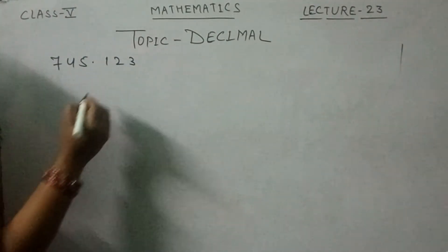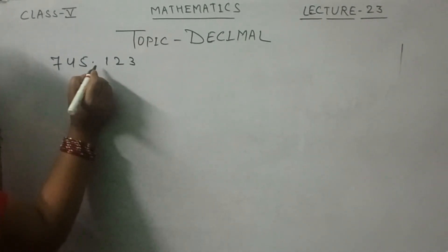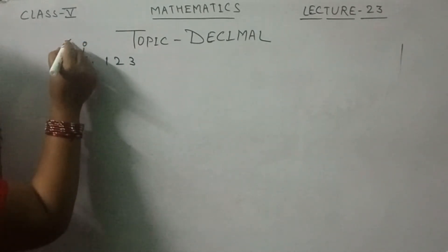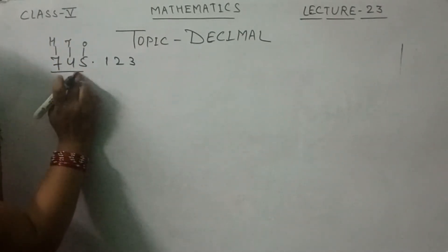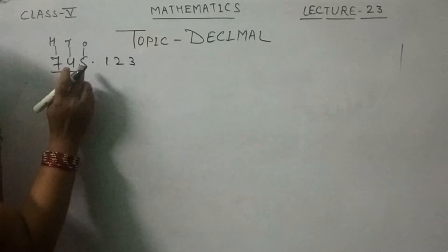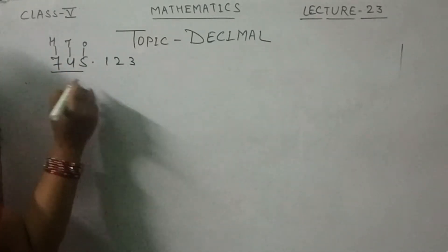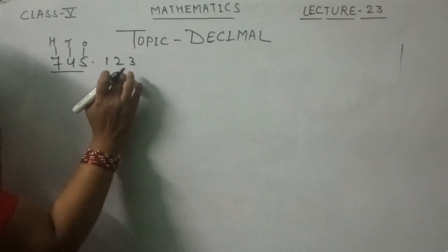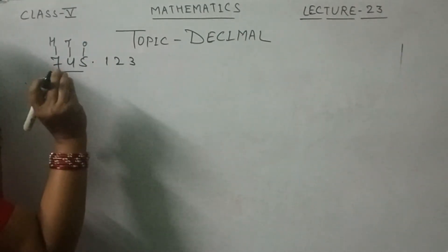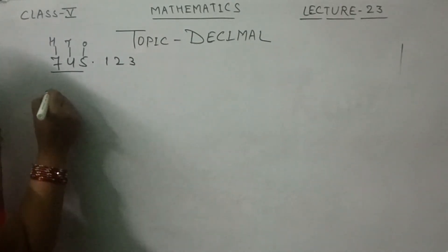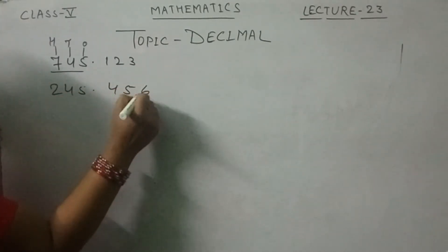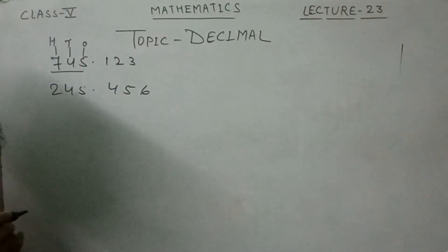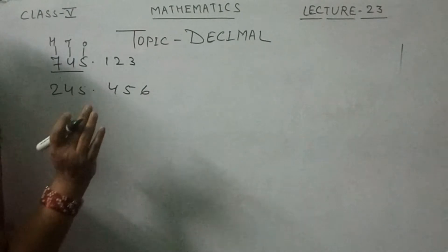Listen how to read this number. The left side of the decimal point is the whole number — this is the ones, this is the tens, this is the hundreds — so we read 745. Then we say 'point.' After the point, you read the digits as they are: 1, 2, 3. Another example: 245.456 — read as 'two hundred forty-five point four five six.'